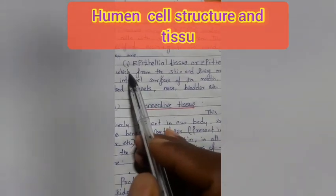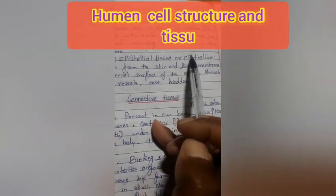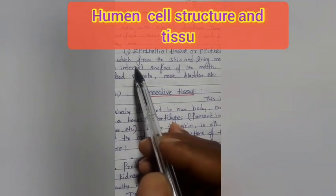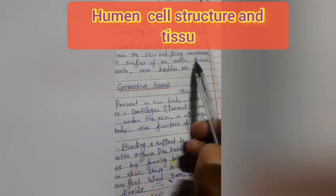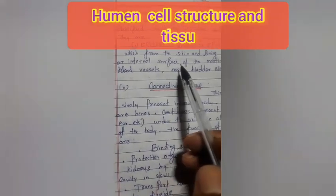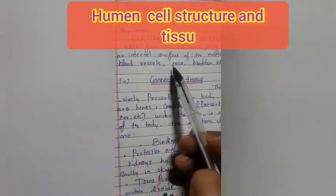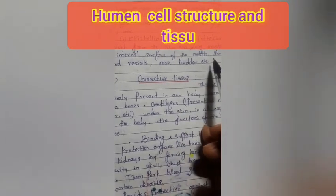Number 1: Epithelial tissue, or epithelium, which forms the skin and lining membrane of internal surfaces such as the mouth, stomach, blood vessels, nose, and bladder.